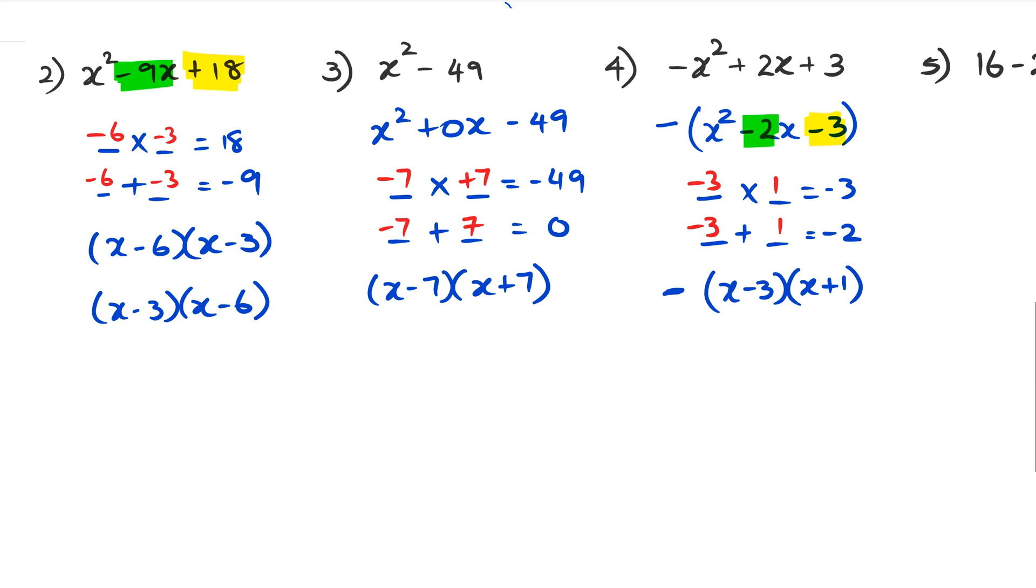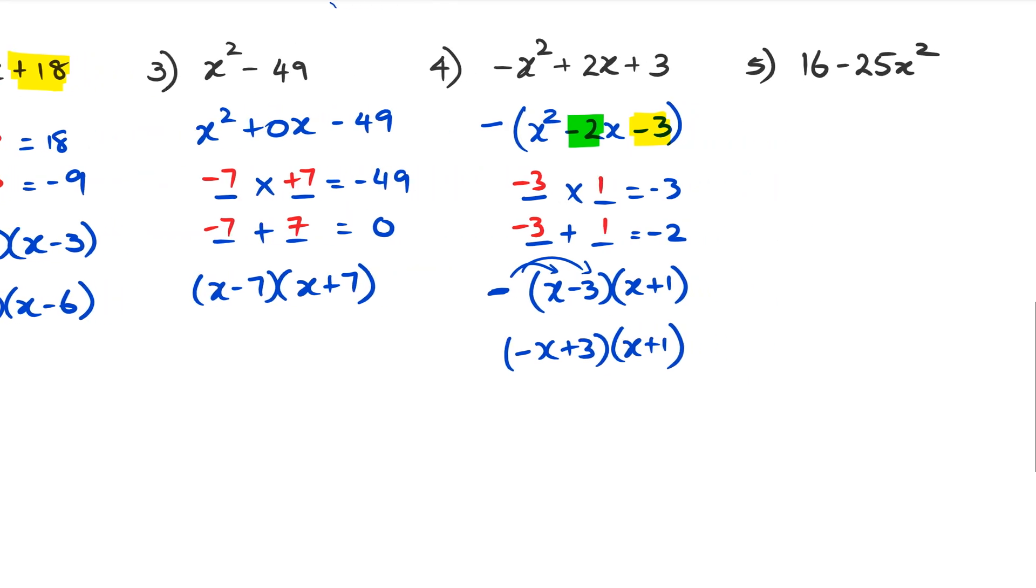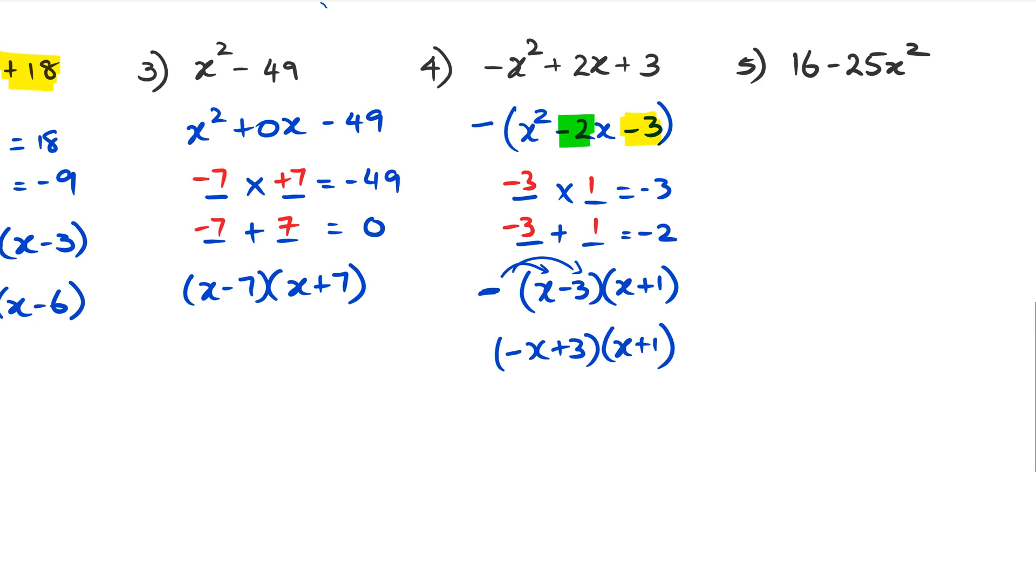You can leave it like this, or you could bring the negative into one of those brackets as well. You could actually have it where negative times x and negative times negative 3 and rewrite it as (-x+3)(x+1). So you have multiple ways of writing the final answer in terms of factorizing, but you've got to get rid of the negative first before you start factorizing.